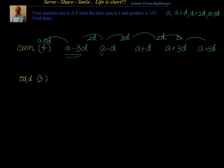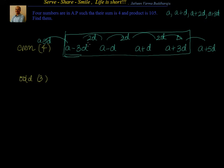Now suppose the count is odd. The key idea is that when you add these numbers, the d terms cancel out and you get the value of a directly — that's a bonus. We can leverage that, and calculating the product becomes very easy because we substitute the value of a obtained from the sum.